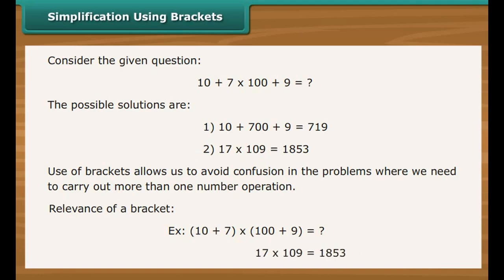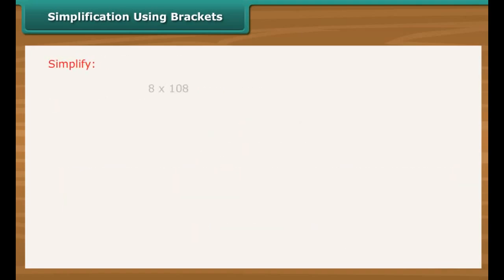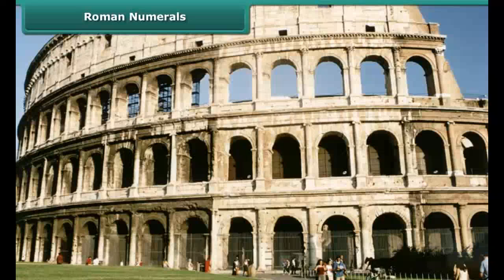Yes, the answer would be as 17 into 109 is equal to 1853. Let us simplify. This can be solved as 8 into 100 plus 8 is equal to 8 into 100 plus 8 into 8, which equals 800 plus 64, which is equal to 864.